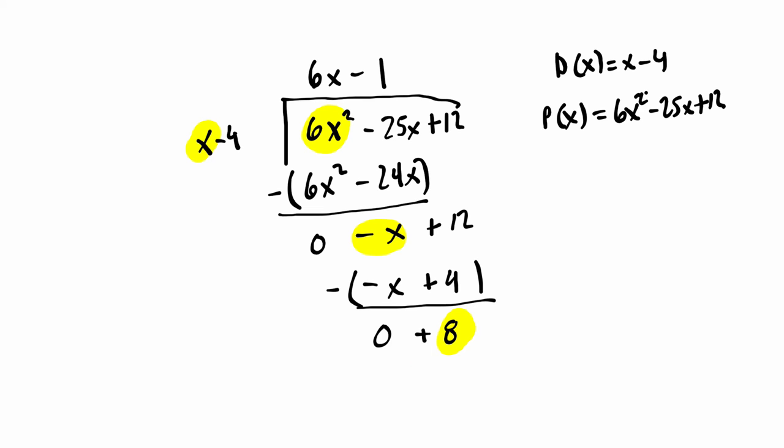And in general here, this is the r value. This is r of x, our remainder. We stop whenever this is a lower degree than the degree of your divisor. This is a 0 degree. A constant is a 0 degree. This is a first degree. Whenever this reaches a lower degree than the divisor, you stop because you're trying to divide and get polynomial functions.